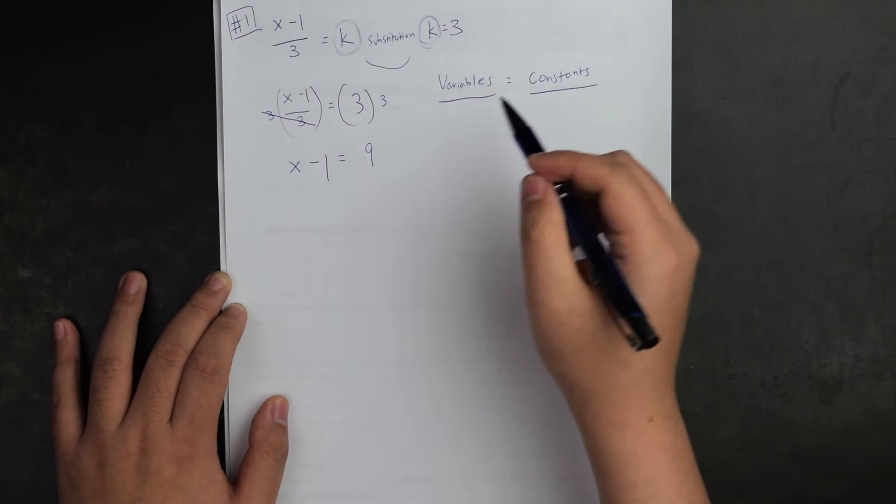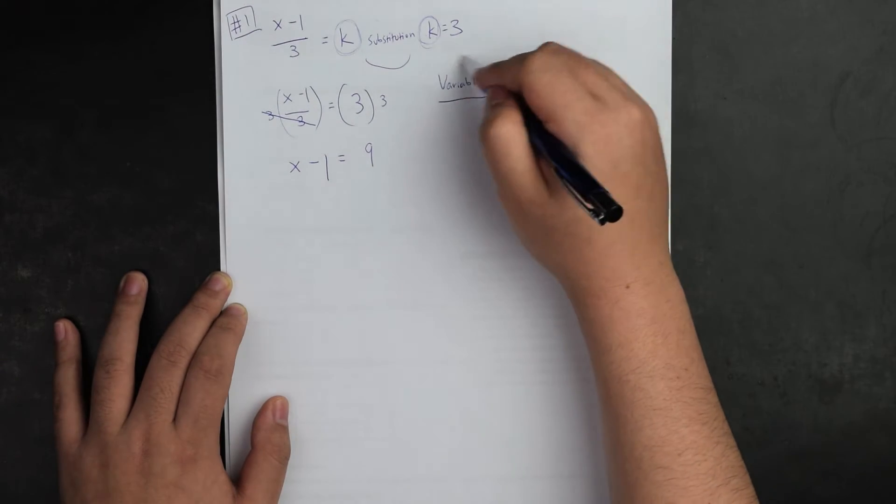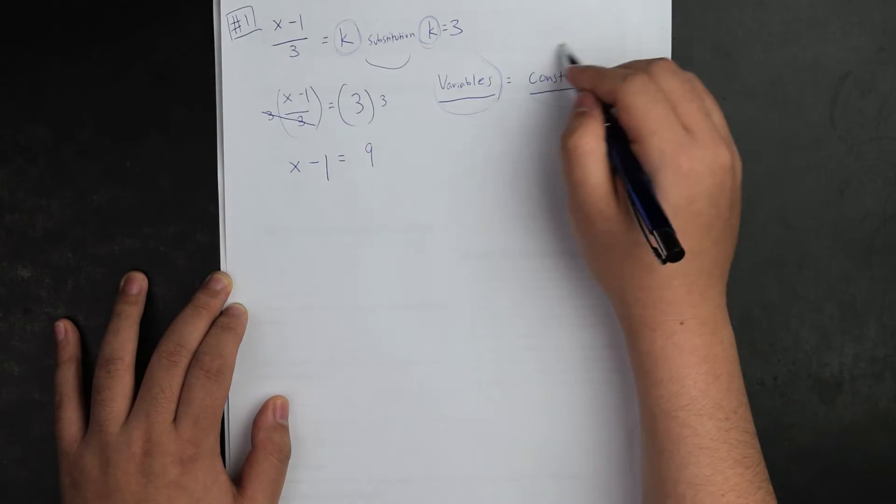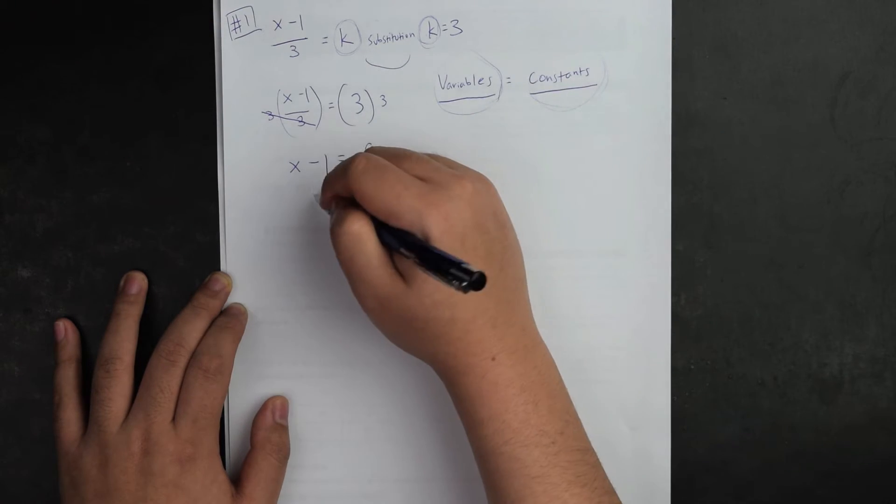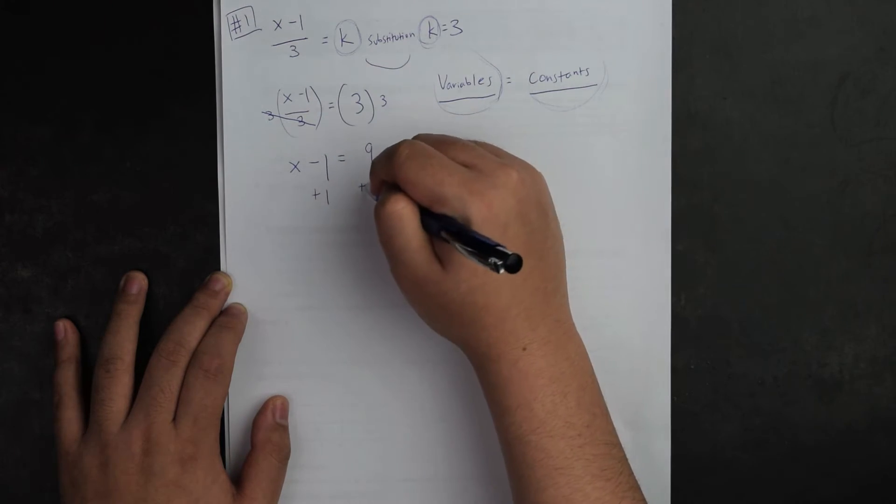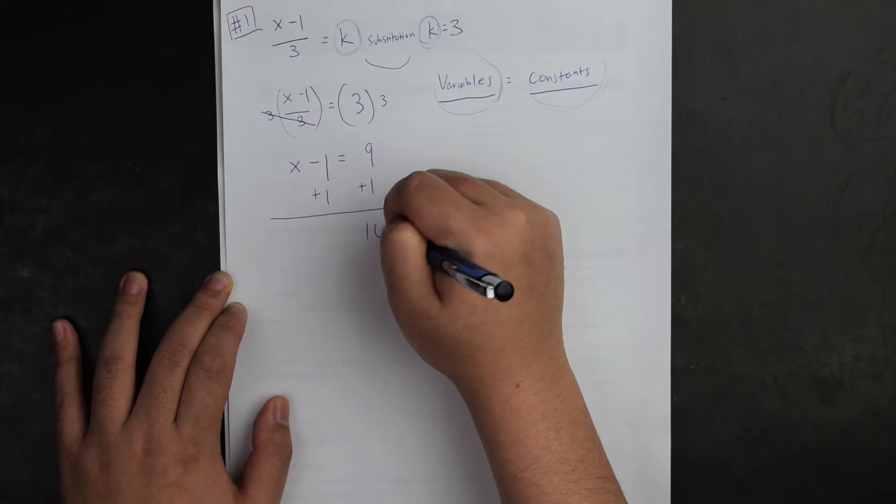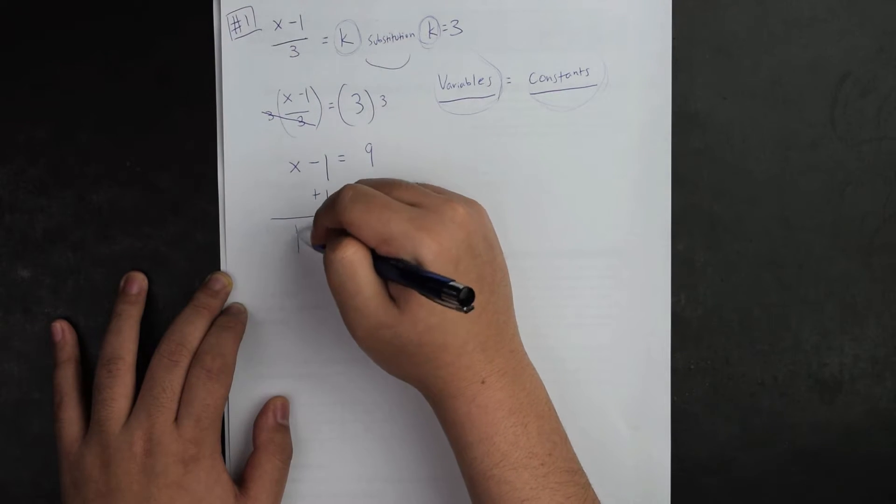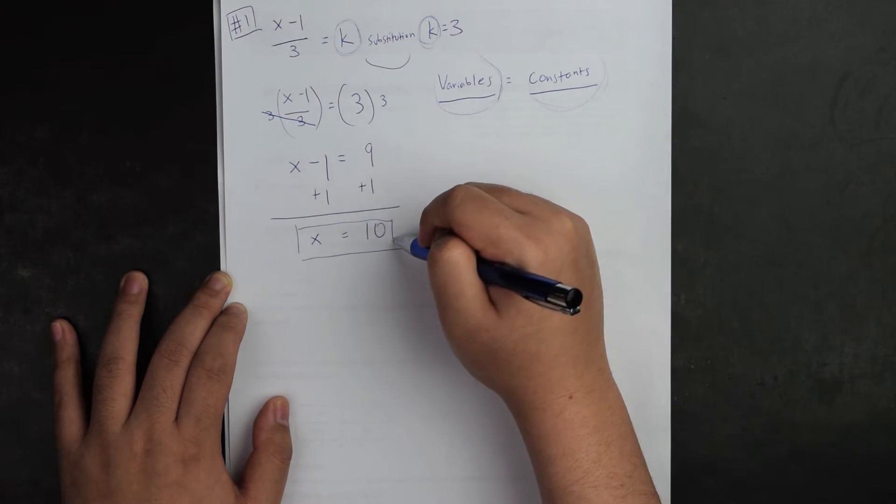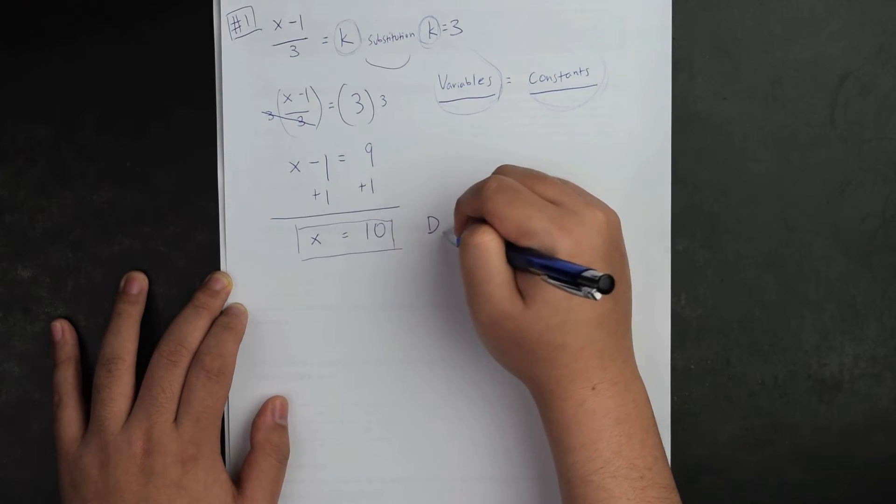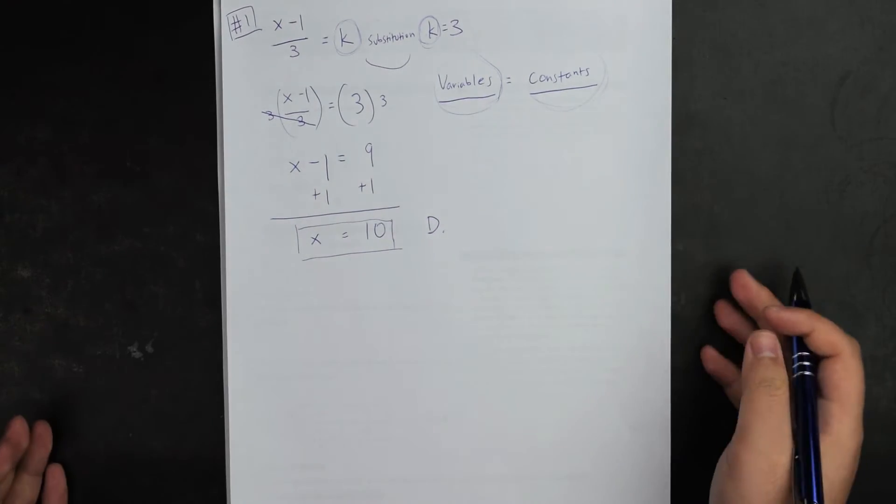But I'm not done yet. Variables must be by itself and constants by itself on each side. I'm going to add one onto each side, and thus I finalize my answer x equals 10. On the multiple choice values, the answer is D.